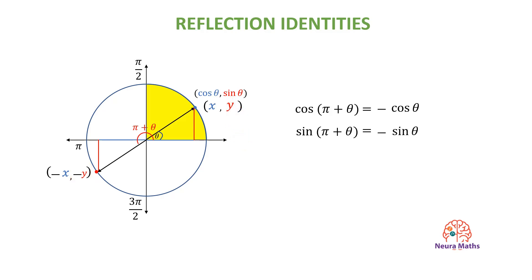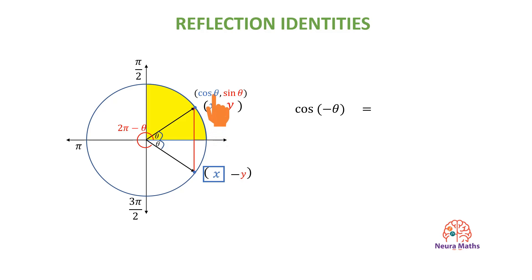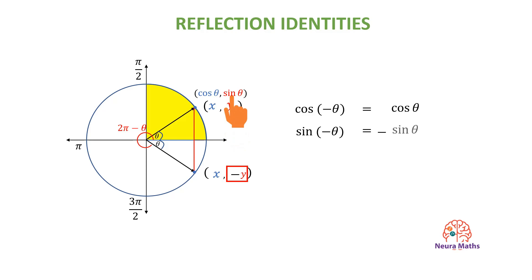When reflecting through the x-axis, the coordinates of the image would be x and negative y, and the new angle would be 2pi minus theta, or negative theta. The x-coordinate of the image equals the x-coordinate of the original, so the cosine of negative theta equals cosine of theta. The y-coordinate becomes negative, so the sine of negative theta equals negative sine of theta.